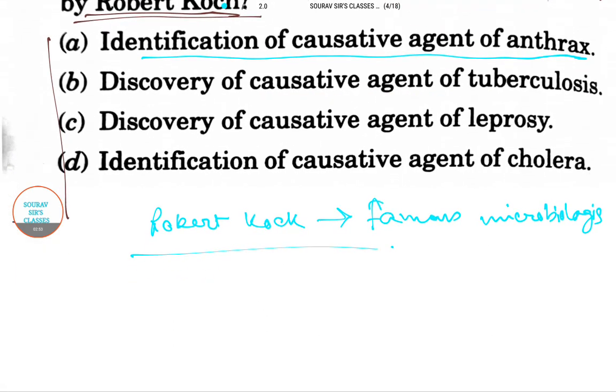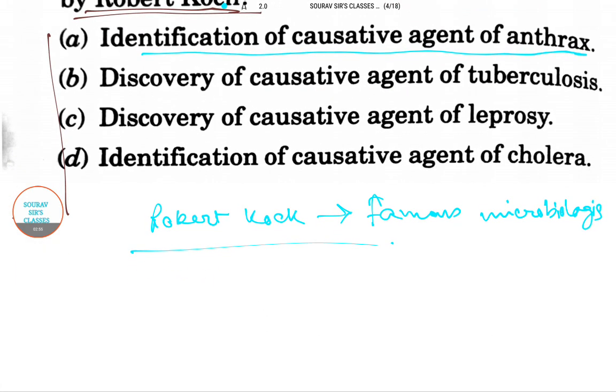Robert Koch has done many things. He had a great role in the identification of specific causative agents of tuberculosis, cholera, and anthrax.